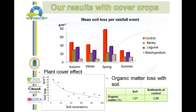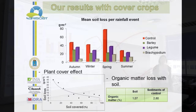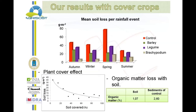The strongest rainfalls in this area are in autumn and in spring. In spring, the control is losing much more soil than the other treatments because the cover crops provide coverage — and of course the permanent cover crop provides coverage all year. In autumn, there are one to two months without soil cover because we have to seed the barley and legumes, so the differences are not so important there, but in spring they are significant.